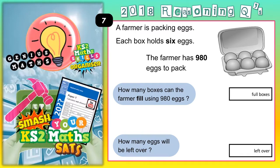Welcome Satsbusters to question 7, and this one's all about boxes of eggs. Careful you don't drop any, otherwise they might break! A farmer is packing eggs. Each box holds 6 eggs. The farmer has 980 eggs to pack.